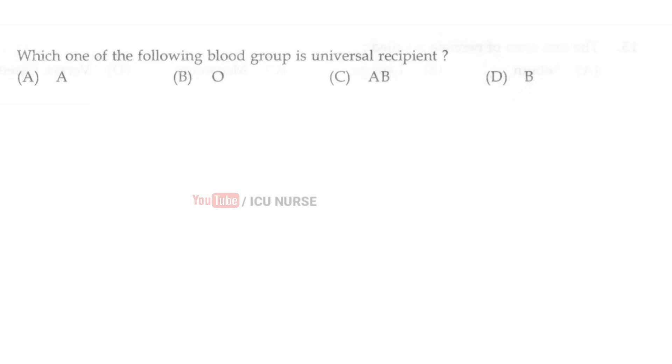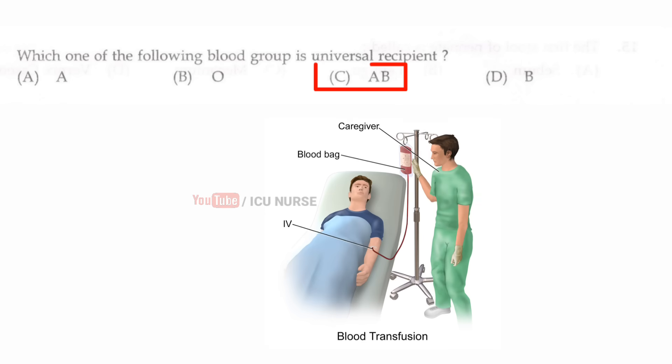Which one of the following blood groups is the universal recipient? The correct answer is C, AB blood group.